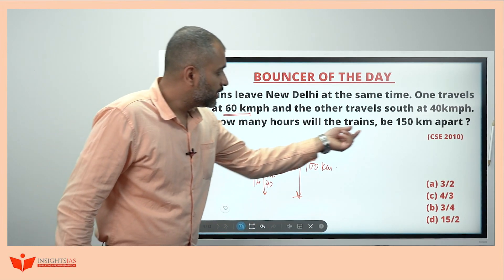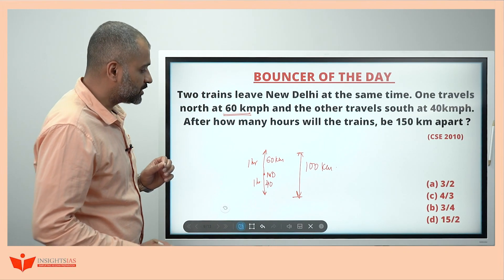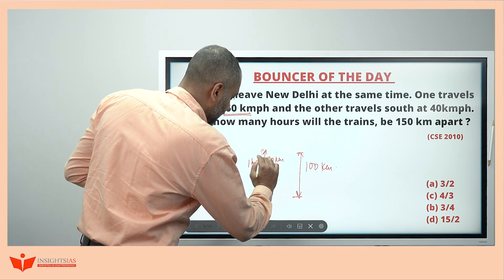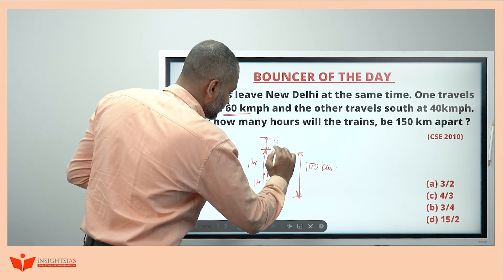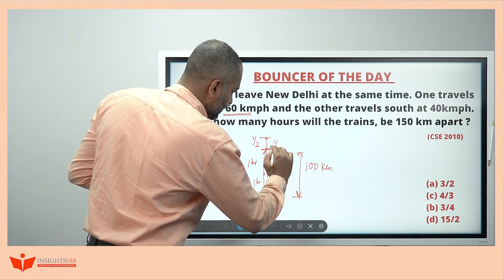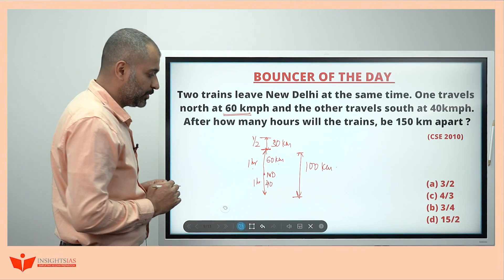And the question is, to get 150 kilometer apart, what is the time taken? In next half an hour, in next half an hour, it will travel. Okay. This is half an hour. It will travel 30 kilometers because 60 kilometers in 1 hour means next half an hour, 30 kilometers.